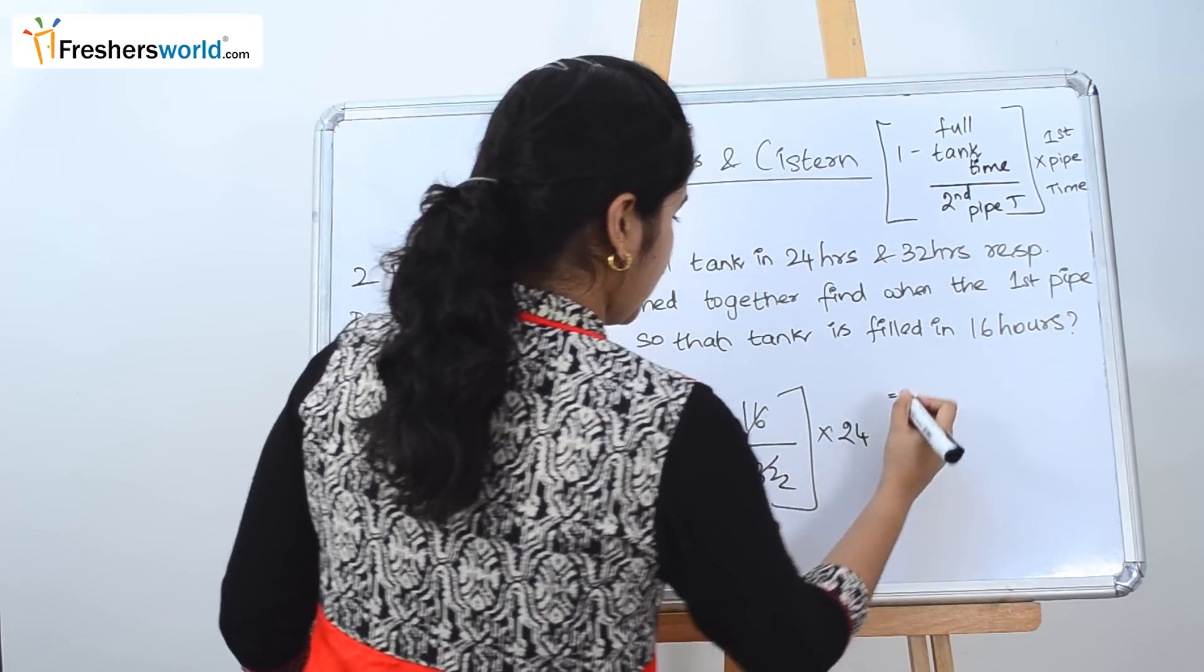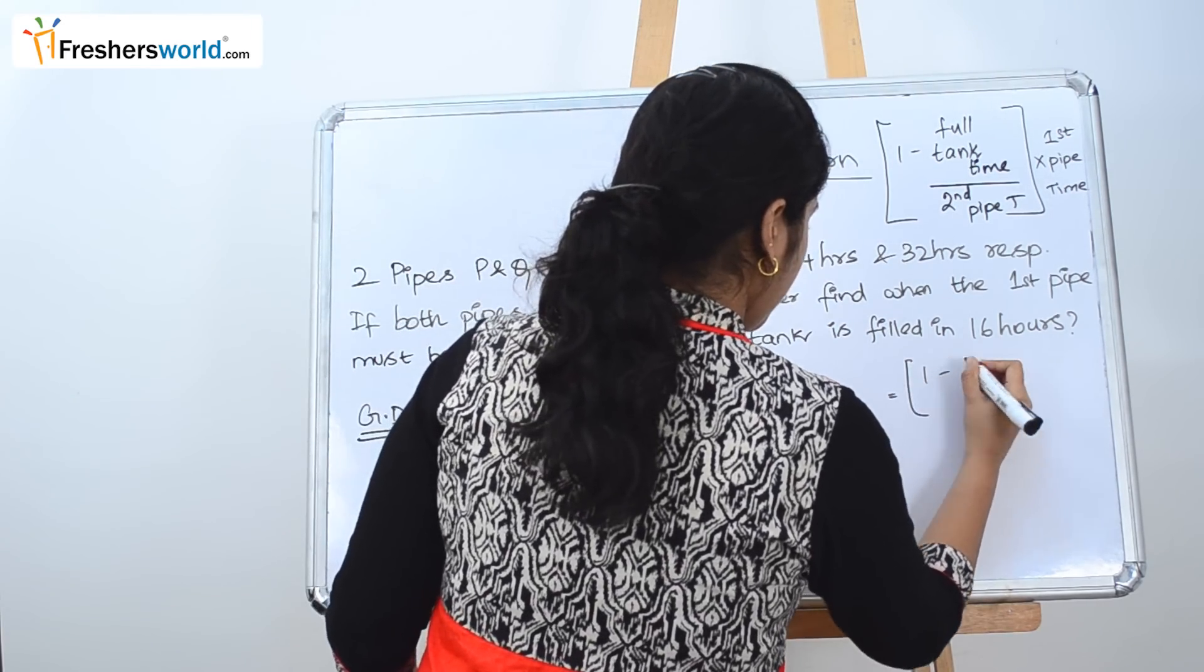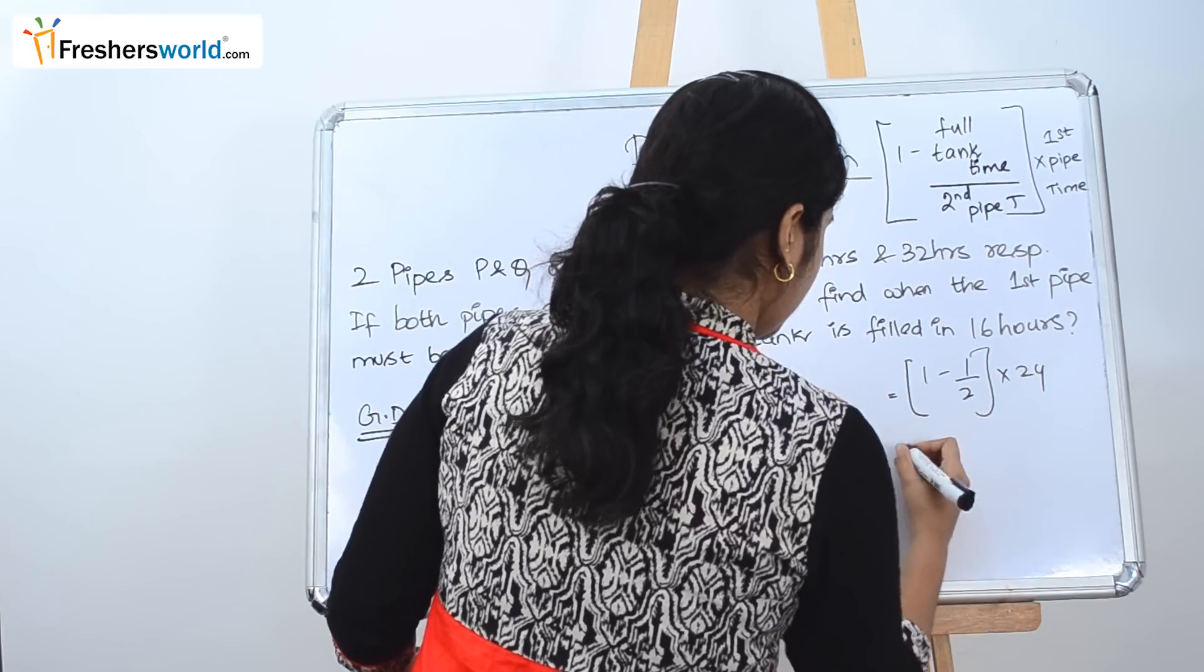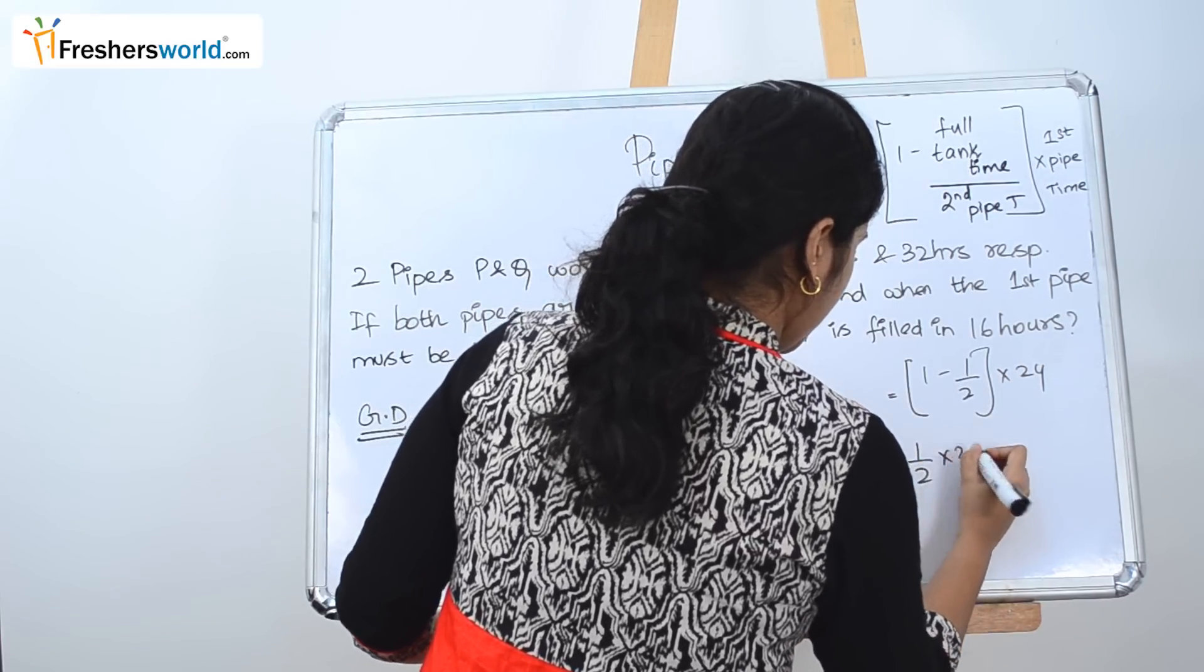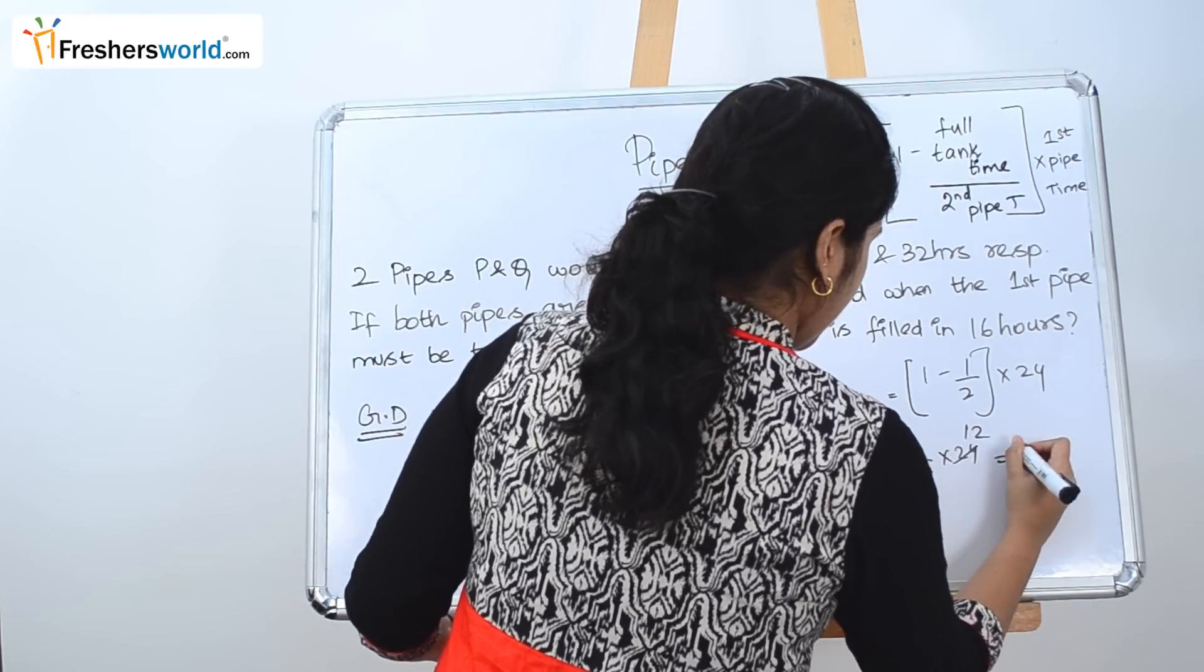So 16 goes into 32 by 2. So 1 minus 1 by 2 into 24, which is nothing but 1 by 2 into 24. It goes 12 times. So 12 hours.